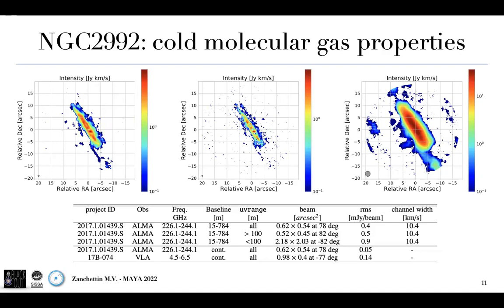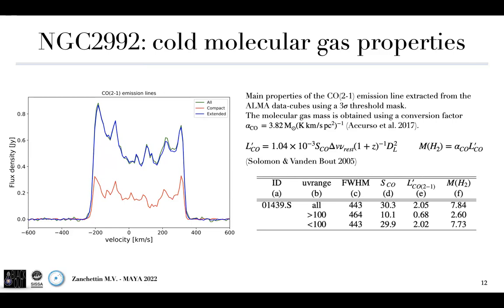Then we compare the main properties of the CO(2-1) emission. We extract the emission from the ALMA data cube applying a 3-sigma threshold mask. To compute the molecular gas mass, we use the conversion factor of about 3.88 solar masses per parsec km/s squared by Kors et al. 2017, and we obtain the molecular gas mass on different spatial scales.